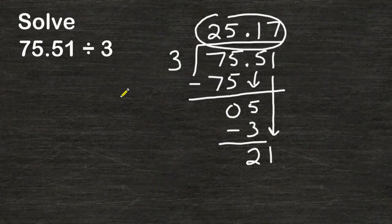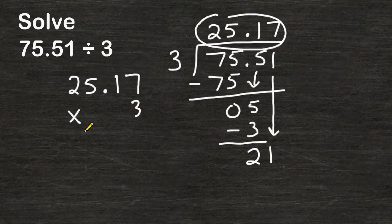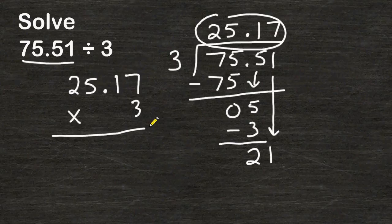And if you are ever unsure about your answer you can simply take your answer which is 25.17 in this case and multiply it by your divisor which is 3 and you should get the dividend that you started with. So let's just check to make sure that we divided it accurately.